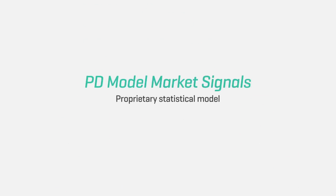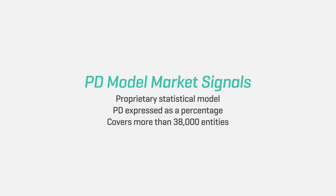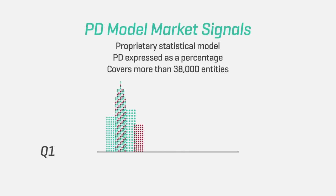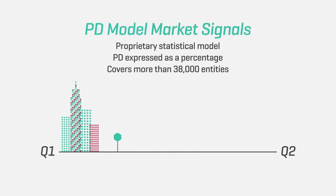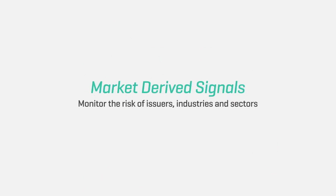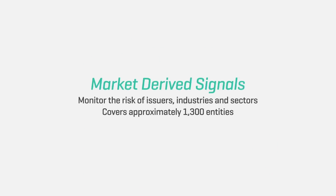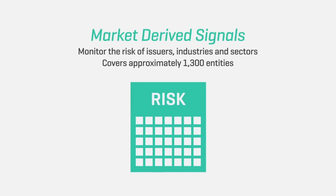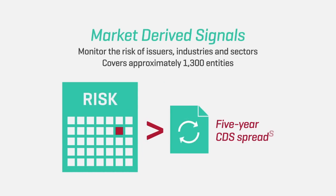Get a point-in-time view of credit risk for financial institutions and corporations that acts as a potential early warning signal of default between financial reporting periods. See how the market perceives risk each day based on measures developed by Standard & Poor's that evaluate five-year credit default swap spreads.